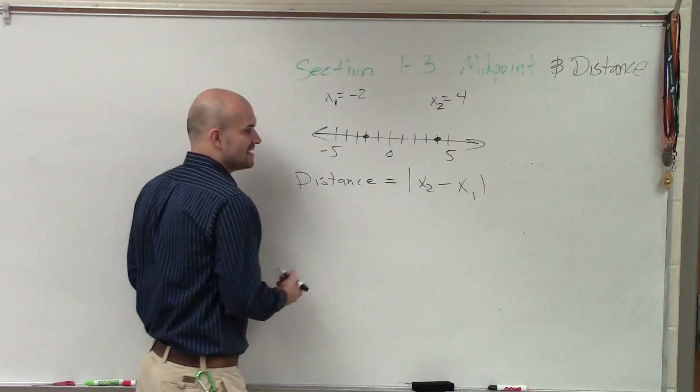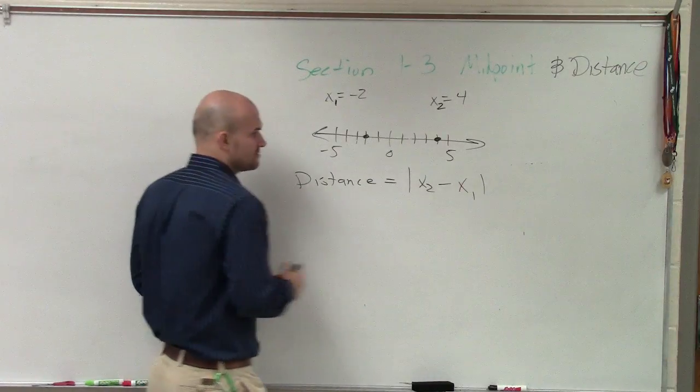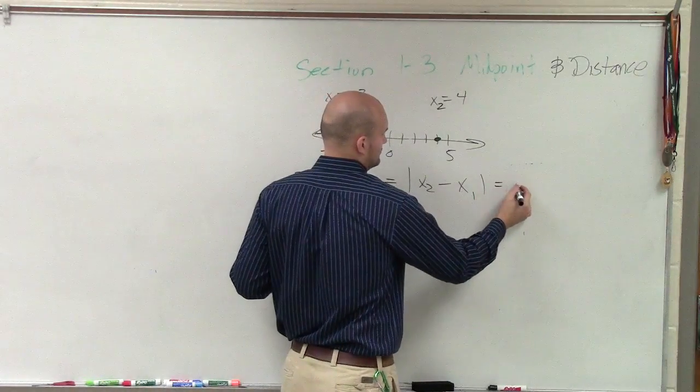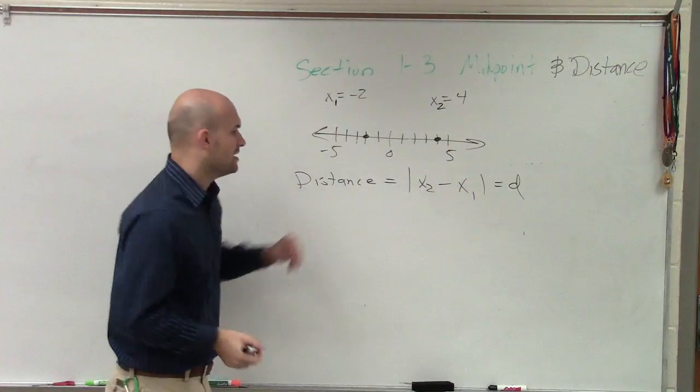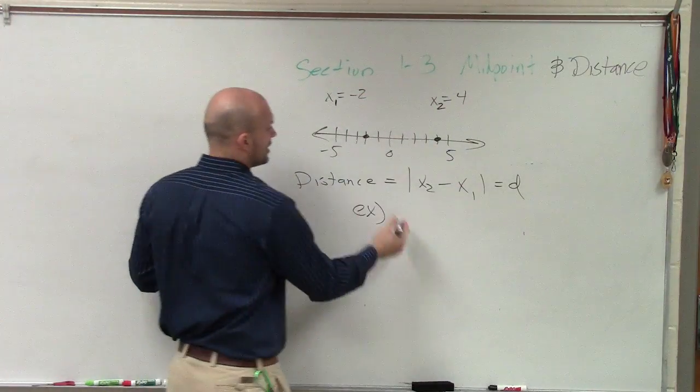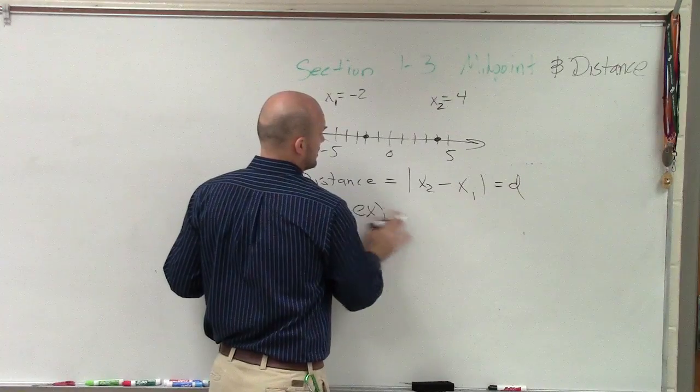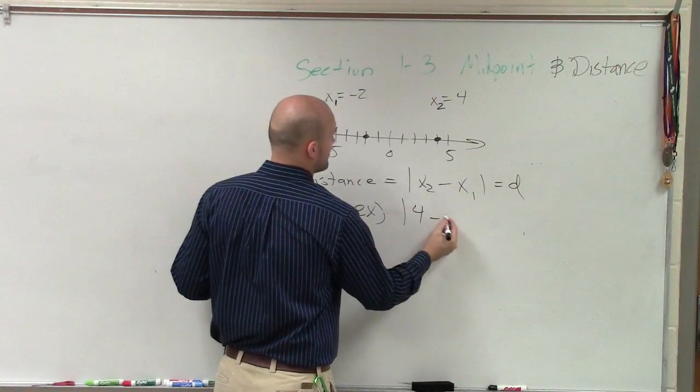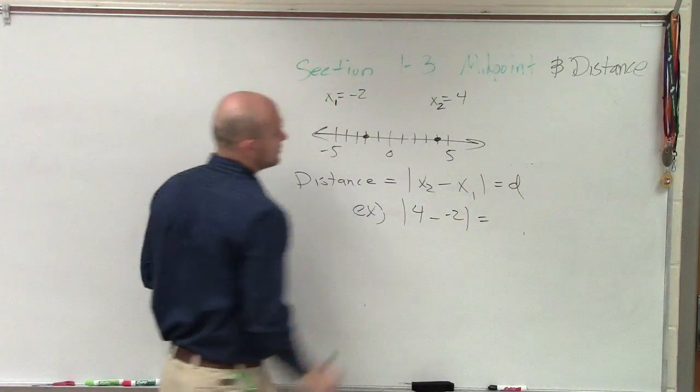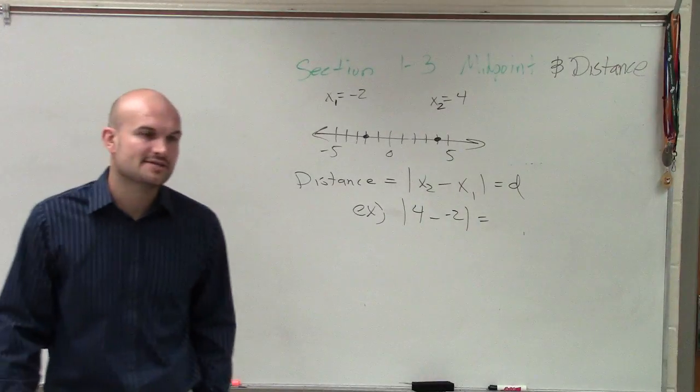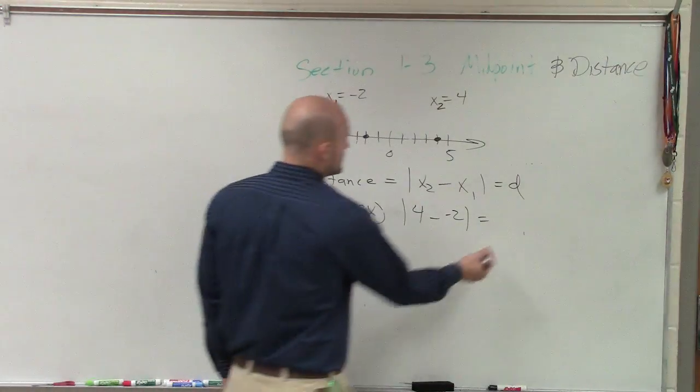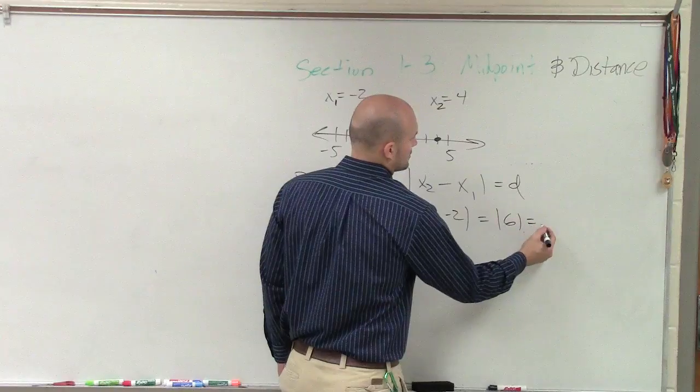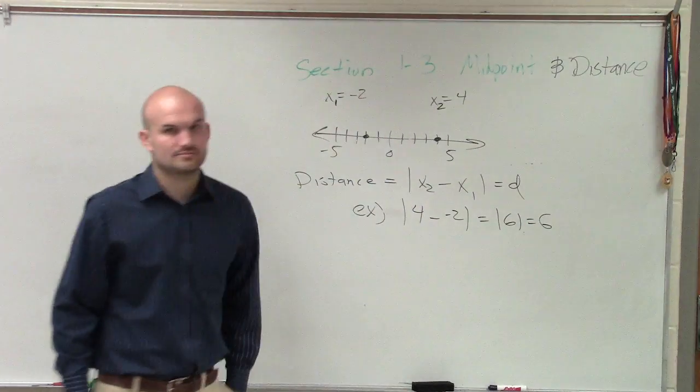So anyways, the distance in this case is going to be your distance, which equals your d. All right? So if I wanted to find the distance in my example, all I'd do is I'd say x2, which is 4, minus a negative 2. So 4 minus negative 2 is going to be 6. Absolute value of 6 equals a positive 6.